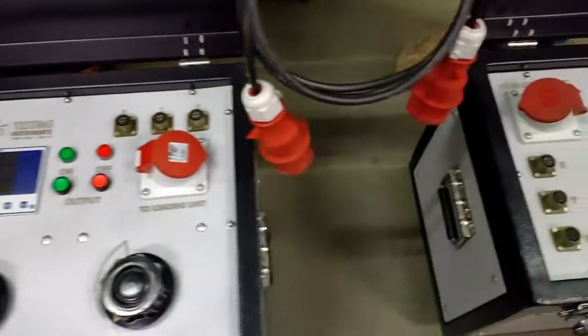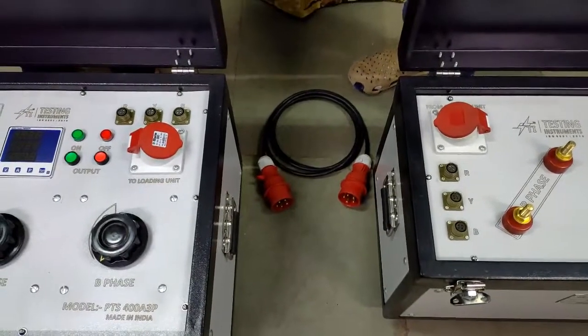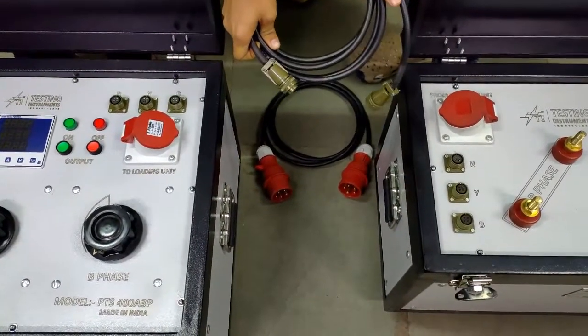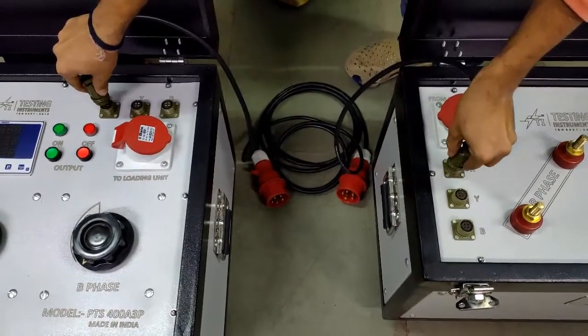Interconnect wire should be connected between control panel and loading unit. All wires are plug-to-plug type and hence easy to detect and easy to connect.